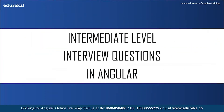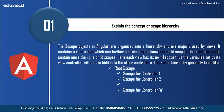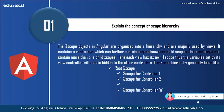With that, we step into intermediate-level interview questions. First, explain the concept of scope hierarchy. Scope objects in Angular are organized into a hierarchy and are majorly used by views. It contains a root scope which can further contain scopes known as child scopes. One root scope can contain more than one child scope. Each has its own scope, so variables set by its view controller will remain hidden to other controllers. The scope hierarchy generally looks like the root scope continued by other scope controllers and any number of controllers.